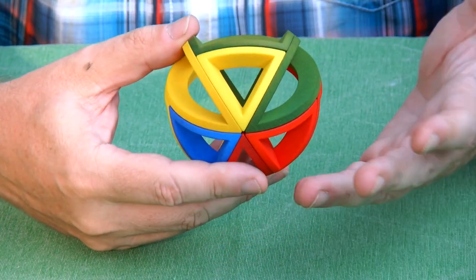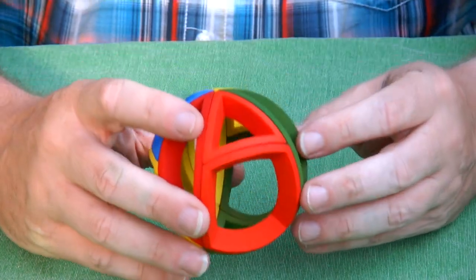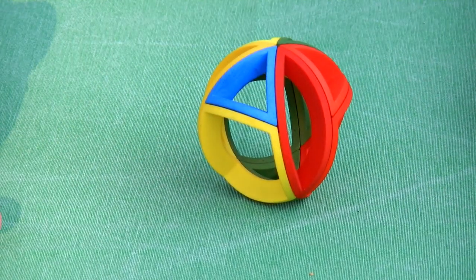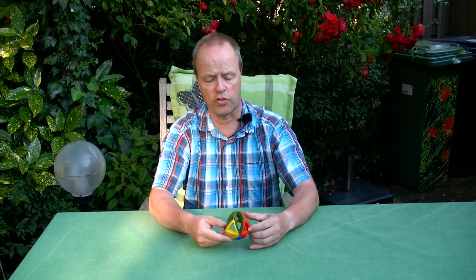So here we are symmetrical again. So my question about this particular puzzle is how difficult do you think that it is to get all the colors back together again once you have scrambled it?